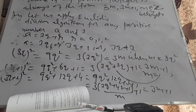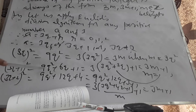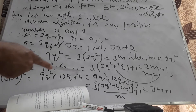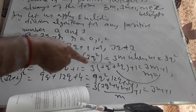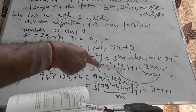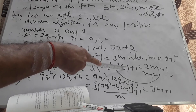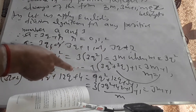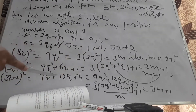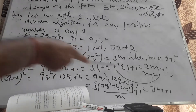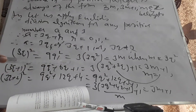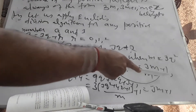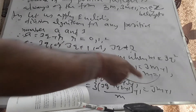(3Q)² is 9Q², which can be written as 3×(3Q²), which is of the form 3m where m is 3Q². (3Q+1)²: apply (a+b)² — gives 9Q²+6Q+1, which is 3(3Q²+2Q)+1, which is 3m+1, where m is that quantity.